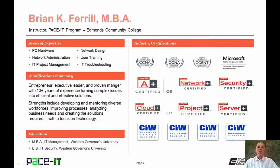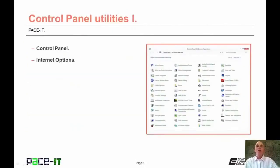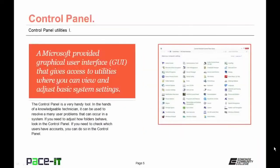Hello, I'm Brian Farrell, and welcome to PACE IT's session on Control Panel Utilities, Part 1. The Control Panel is a user interface that gives access to applets — small programs — that the user can use to adjust basic system settings. It can be a very handy tool for a knowledgeable technician. Now let's move on to the Internet Options applet, which is used to control the default behavior of Internet Explorer. Once you open it, you'll find seven tabs.